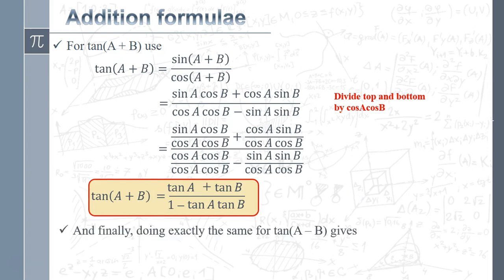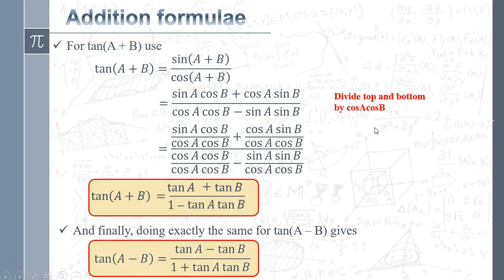Doing the same process with sin(A − B) and cos(A − B), dividing by cos A cos B, gives: tan(A − B) = (tan A − tan B)/(1 + tan A tan B). Notice the signs are reversed compared to the tan(A + B) formula. These two are also in the formula booklet. They're used less frequently than the sine and cosine ones, but they do appear on exam papers.